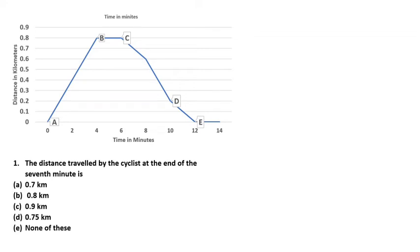First question: the distance traveled by the cyclist at the end of the seventh minute. Looking at the graph, at six minutes the distance is 0.8 km and at eight minutes it is 0.6 km, so at the seventh minute the distance will be approximately 0.7 km. So 0.7 kilometer is the correct answer. These questions can be answered directly by reading the graph.